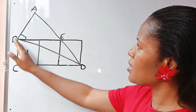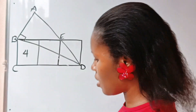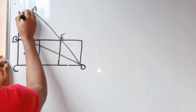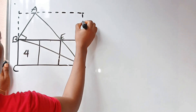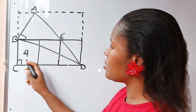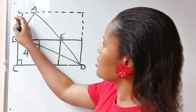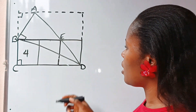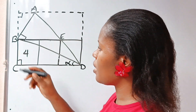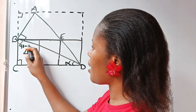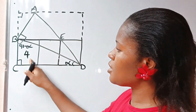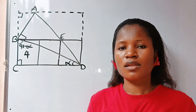So the first thing I'm going to do is to complete this particular rectangle. Having done that, this is 90 degrees, and this is 90 degrees. If we call this angle alpha, then angle B is 90 minus alpha. Now, this particular square has area 4.